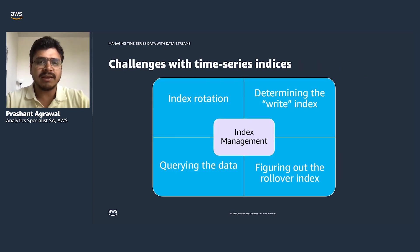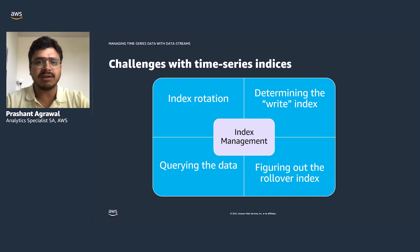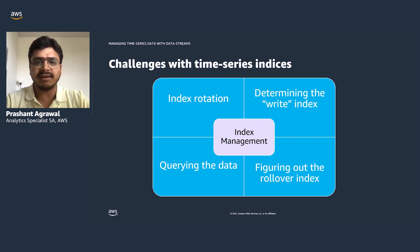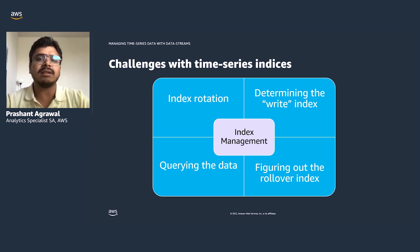This diagram shows how users set up their indexes for time series data. They start by setting up the index template where they define index mapping and an alias, which is helpful for querying the data. Next, they configure an index state management policy to set up index rotation, then write rollover policies and the write alias for defining those indices.